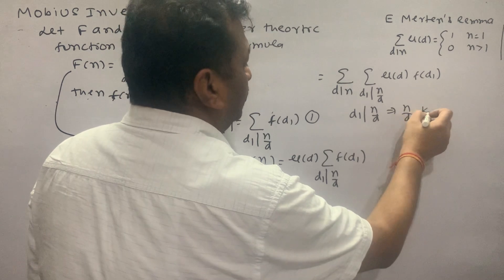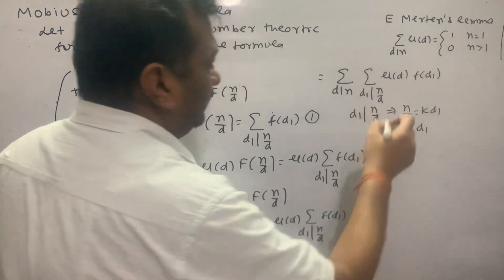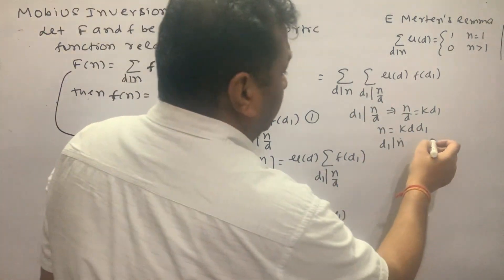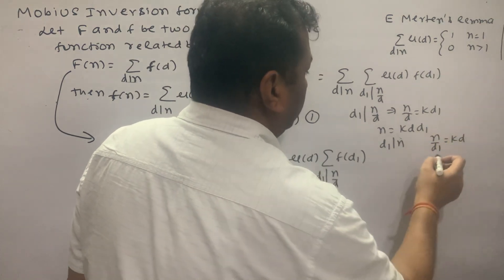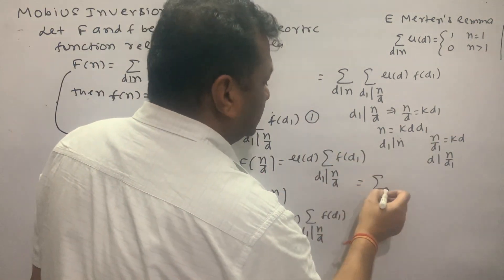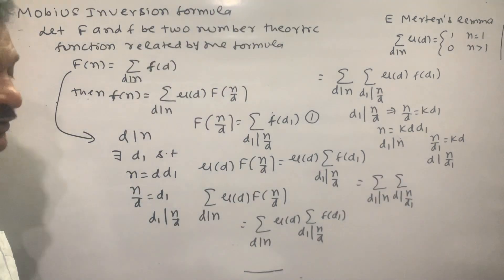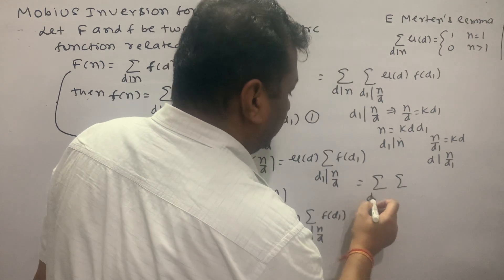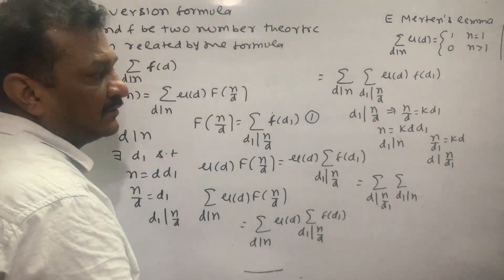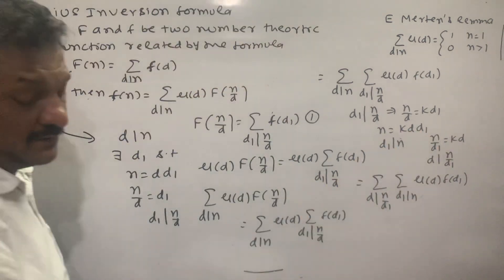Since n upon d equals k times d₁, we have n equals k times d₁, and n upon d₁ equals k times d, so d divides n upon d₁. We change the order of summation: summation over d₁ dividing n of summation over d dividing n/d₁ of μ(d) times f(d₁).